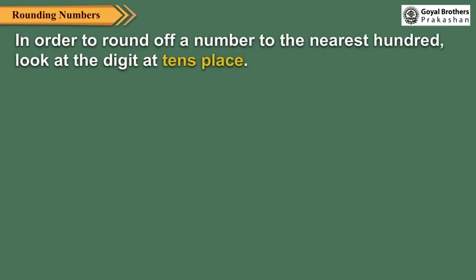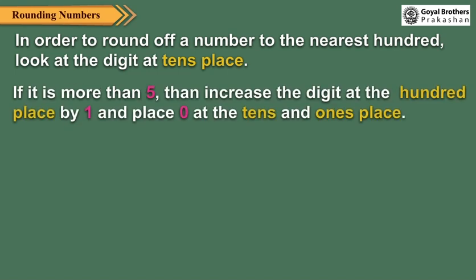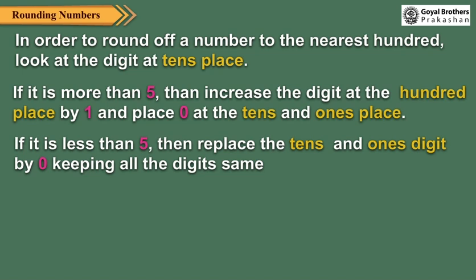In order to round off a number to the nearest hundred, look at the digit at the tens place. If it is more than five, then increase the digit at the hundreds place by one and place zero at the tens and ones place. If it is less than five, then replace the tens and ones digit by zero, keeping all the digits the same.